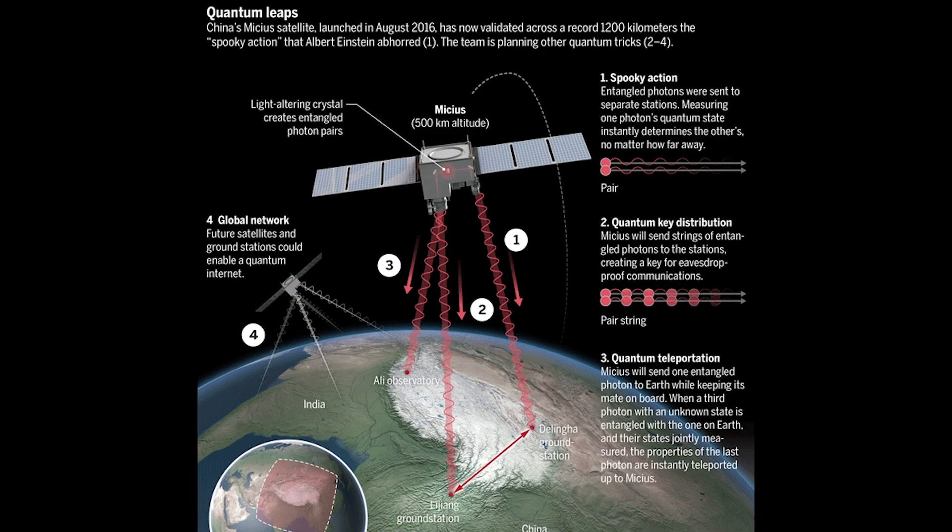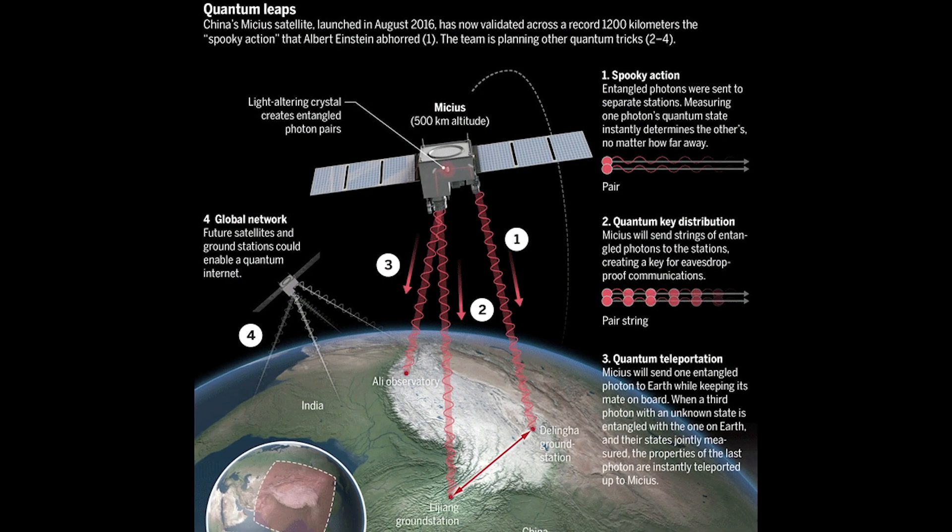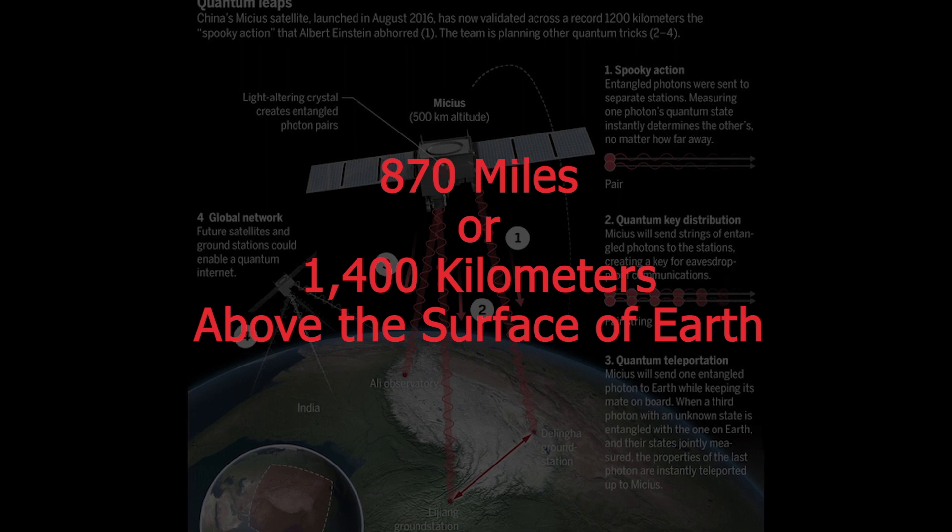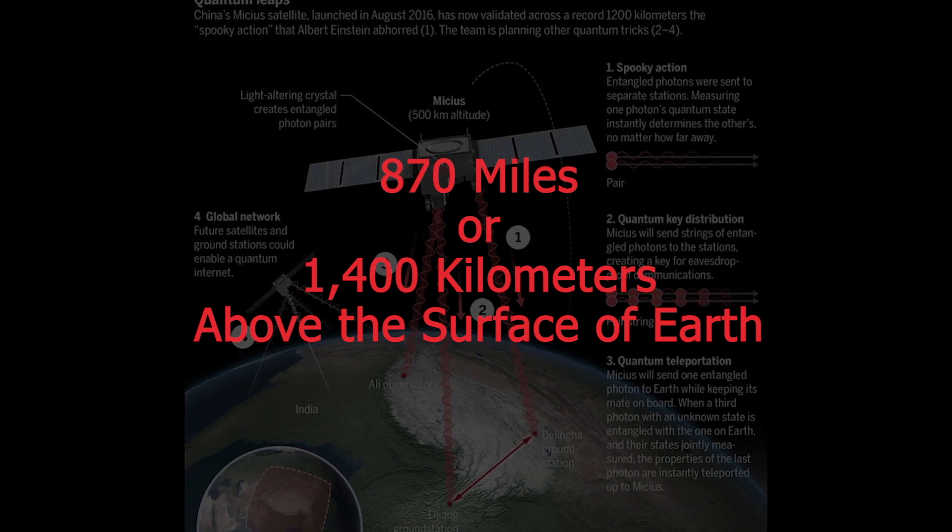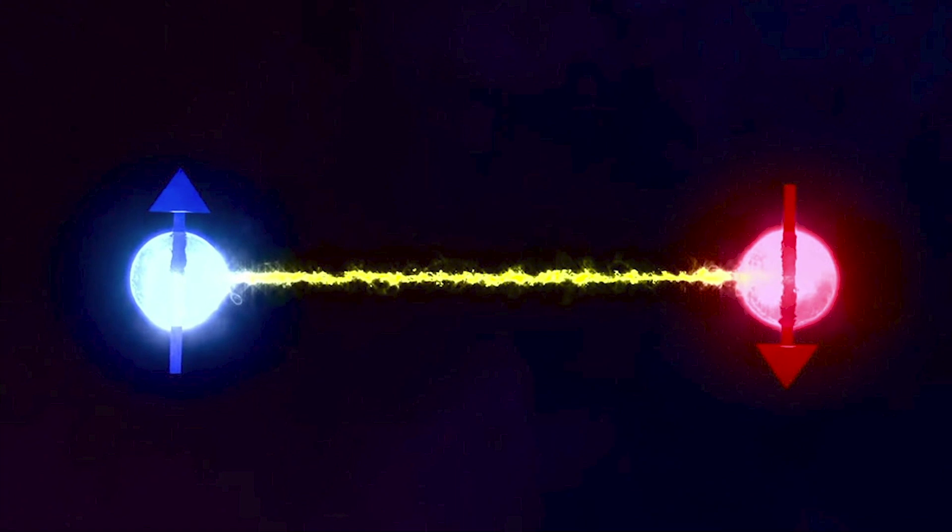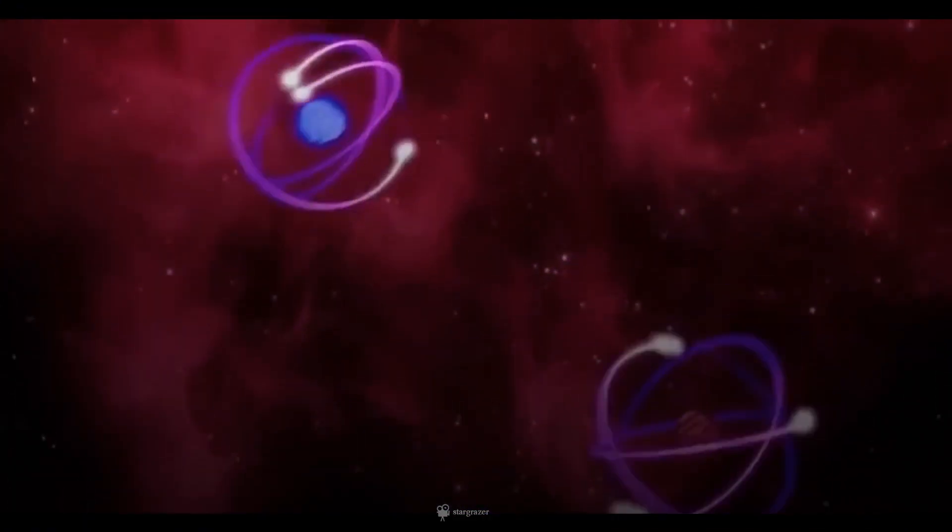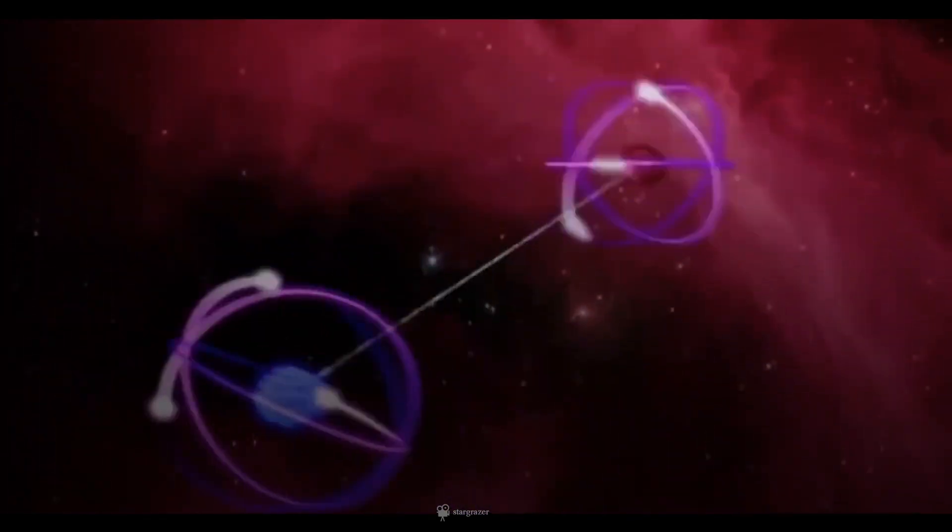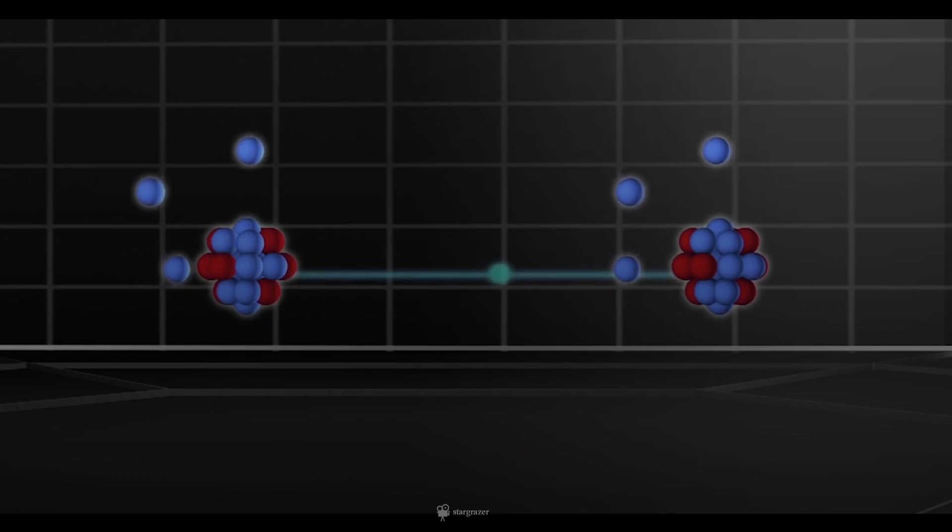Chinese scientists sent a packet of information from Tibet to a satellite in orbit up to 870 miles or 1,400 kilometers above the Earth's surface. This was done by using quantum entanglement. The basic principle of two quantum entangled particles is that one changes its spin, or state, based on another one.